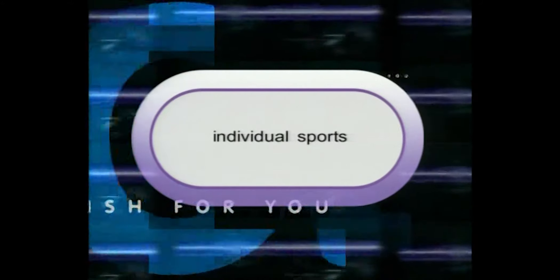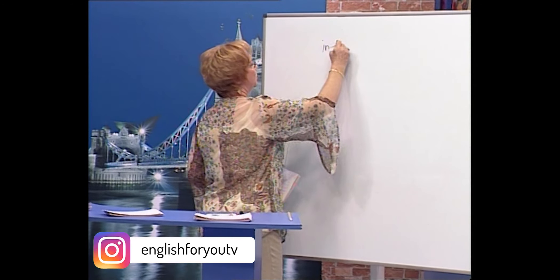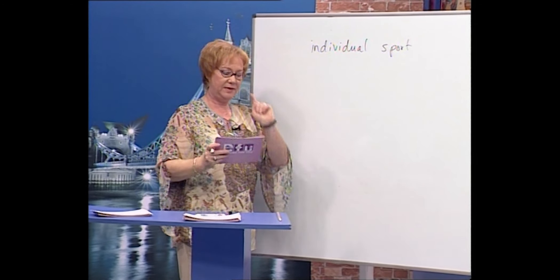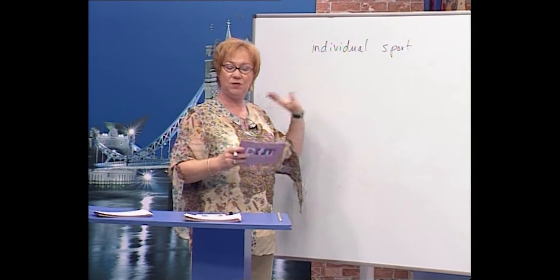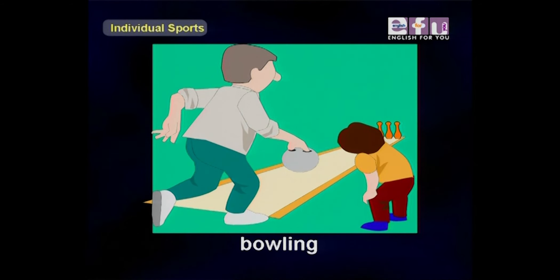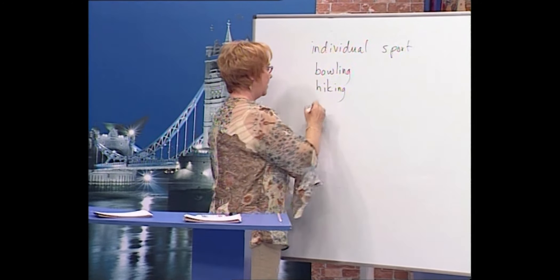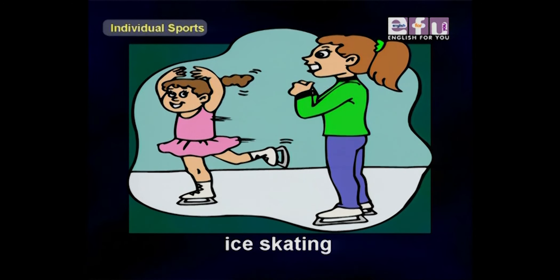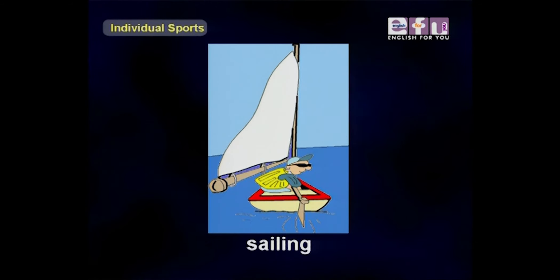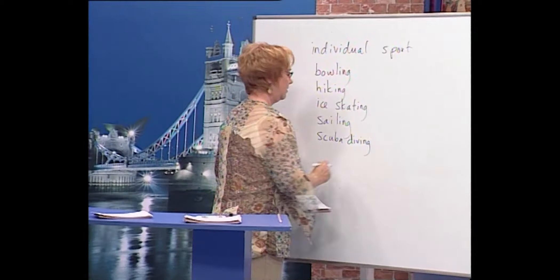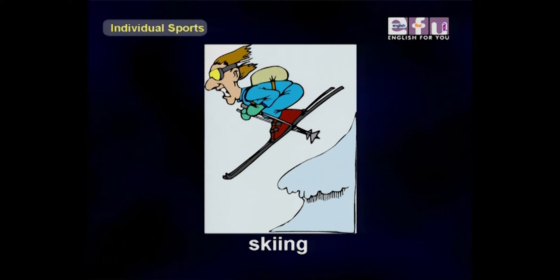Let's talk about individual sports. When a person can do a sport alone — one person — we call that an individual sport. Now let's look at some names for individual sports: bowling, hiking, ice skating, sailing, scuba diving, skiing, and swimming.